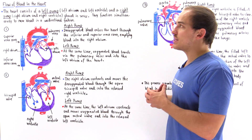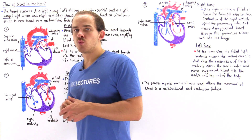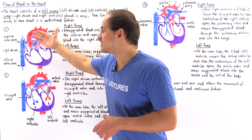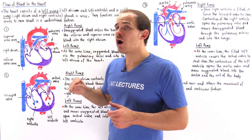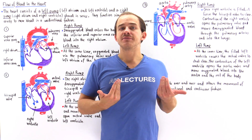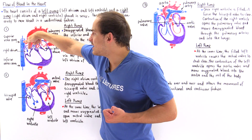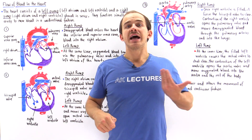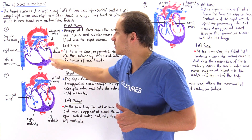We're going to discuss the way that blood actually moves within the four chambers of the heart. In stages one, two, and three, we're taking a cross section of the heart to expose the four different chambers, examining the heart from a front-side perspective. The right side contains the right atrium and right ventricle, while the left side contains the left atrium and left ventricle.